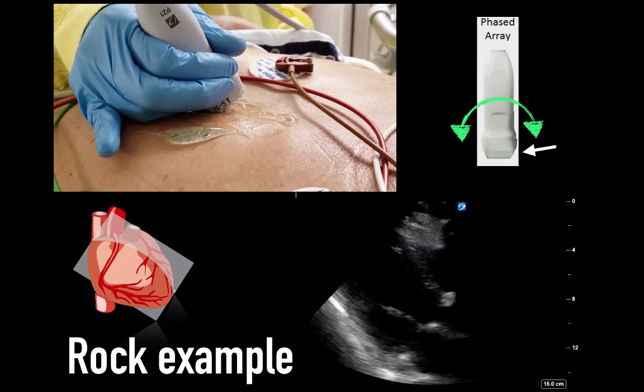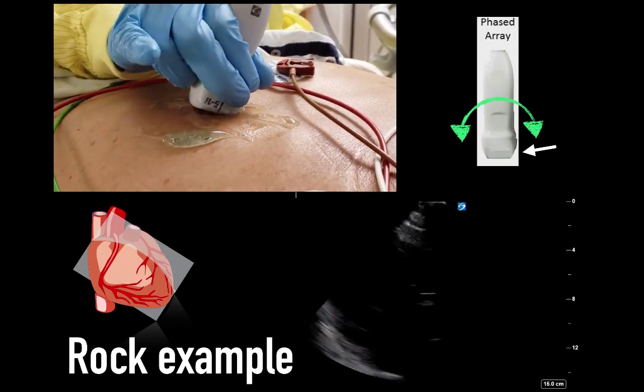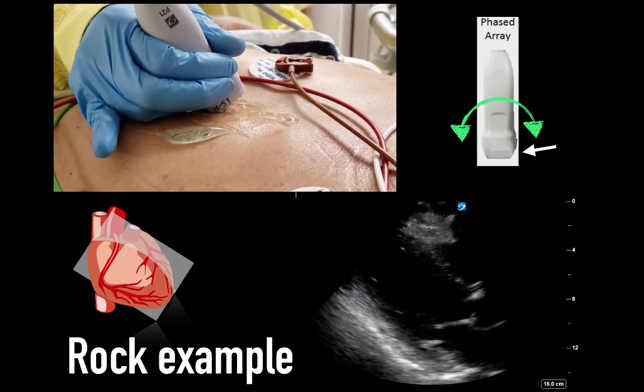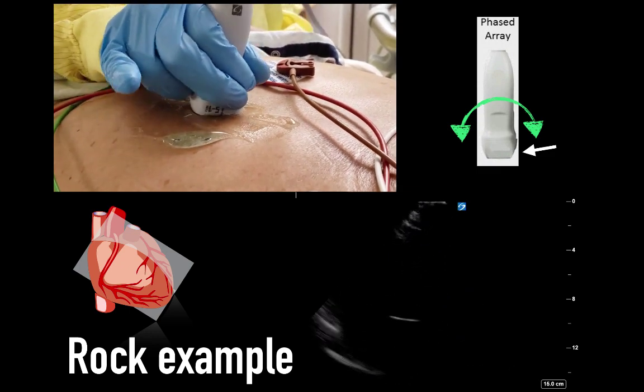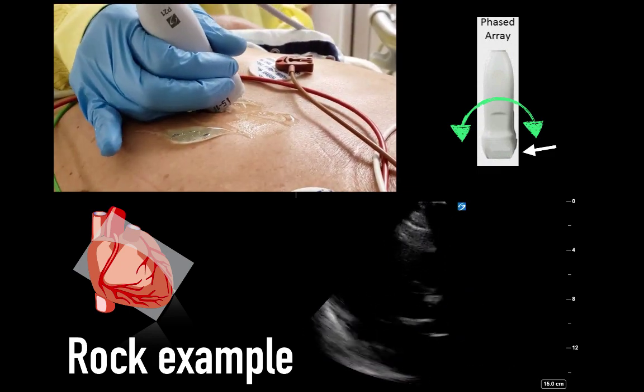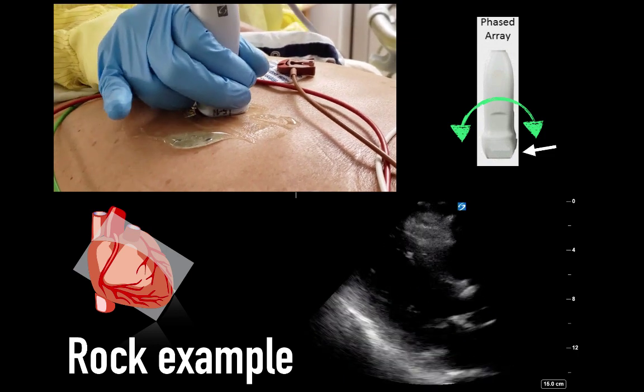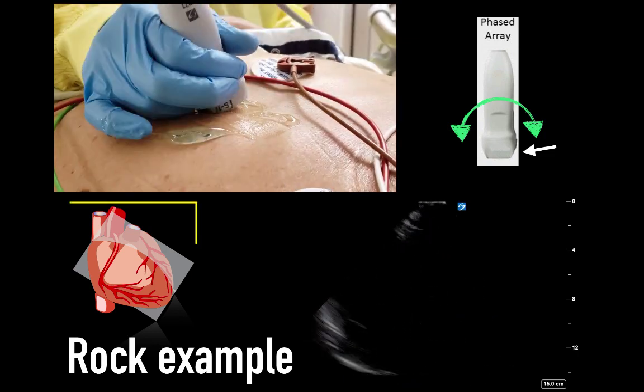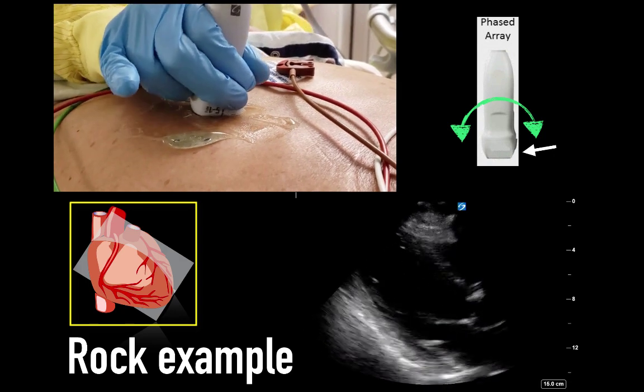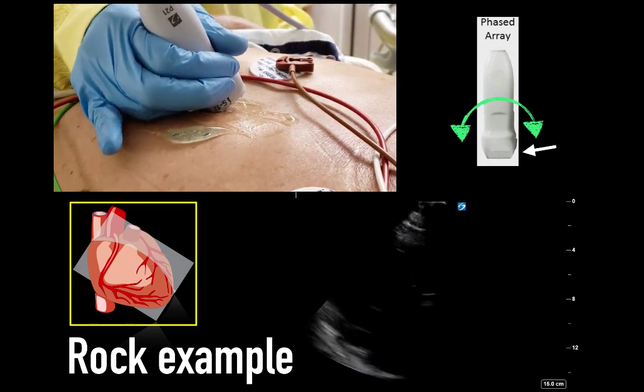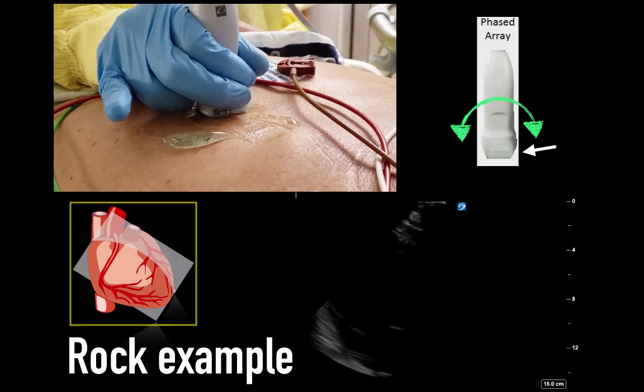Here's a rocking example on the parasternum. This is on the third intercostal space on the parasternal axis. As the probe rocks back and forth, we can see different aspects of the heart. This cartoon at the bottom left illustrates this anatomical cross-section of the parasternal long axis and how we're really manipulating this image.